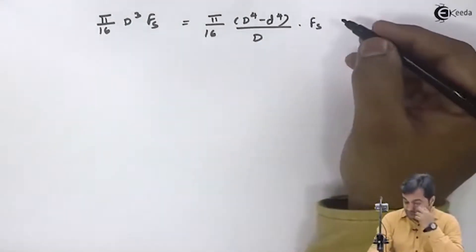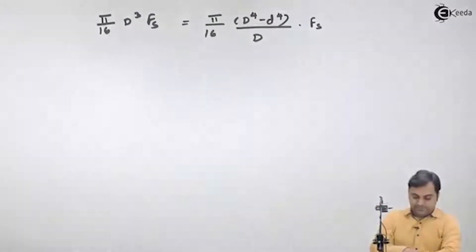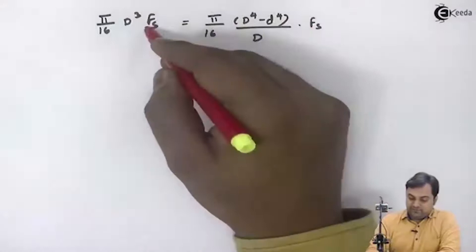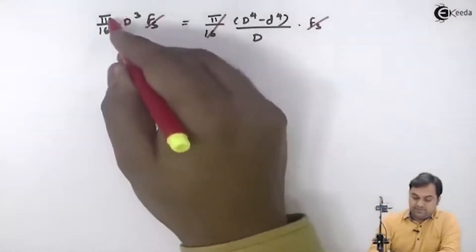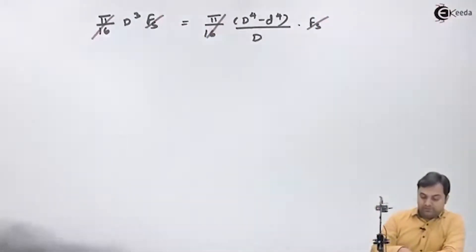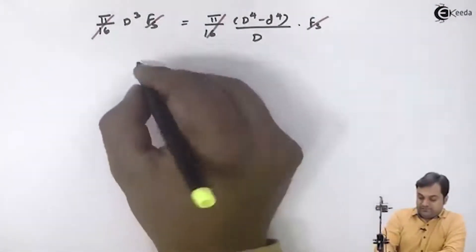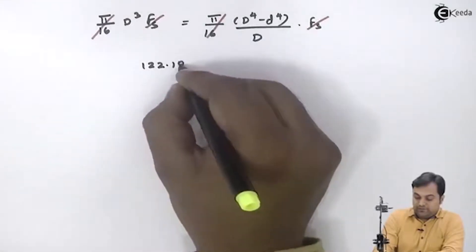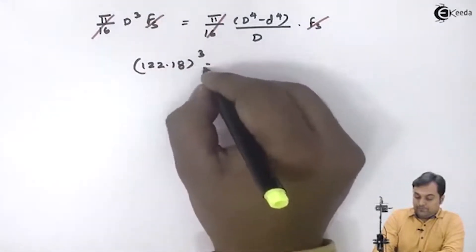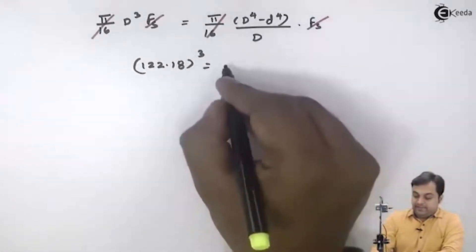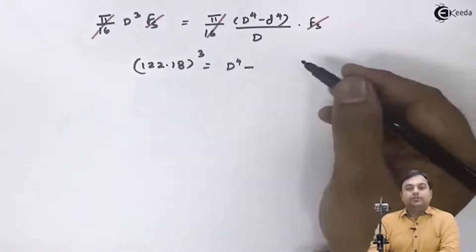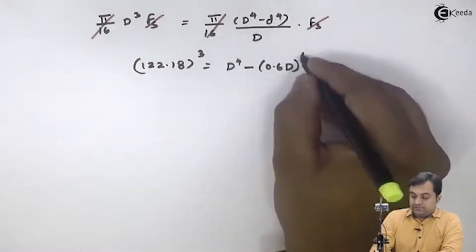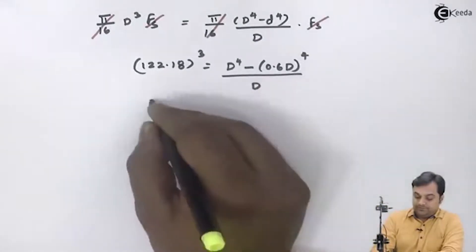Since I am equating the torque on both sides and the shear stress value is the same, fs cancels out. π/16 also cancels out on both sides. The diameter of the solid shaft, 122.18 mm cubed, equals the hollow shaft expression, where small d is replaced by 0.6 times capital D, divided by capital D.